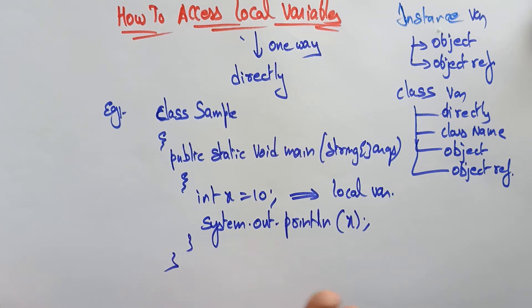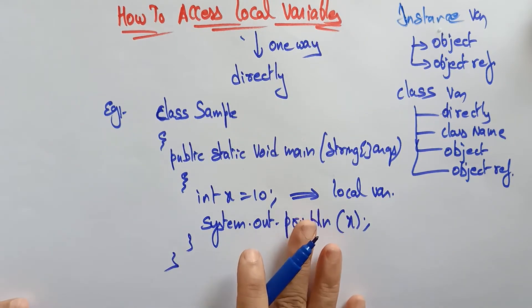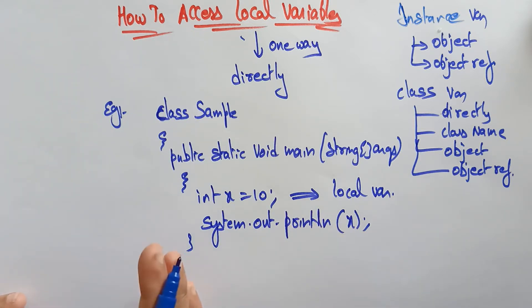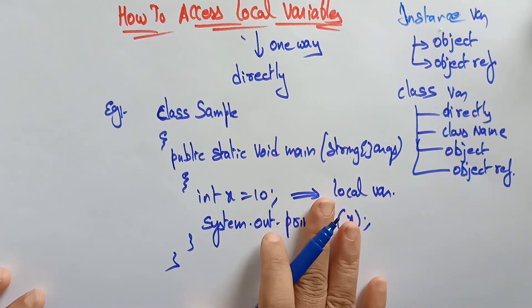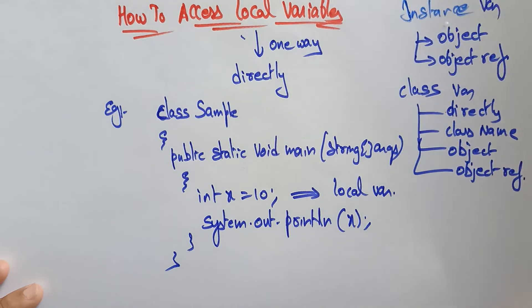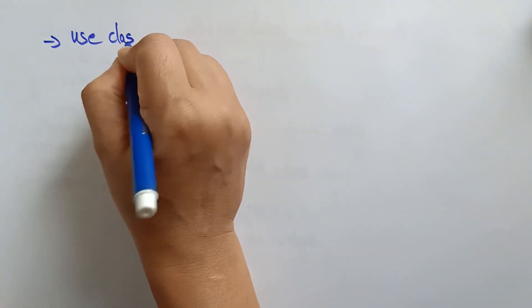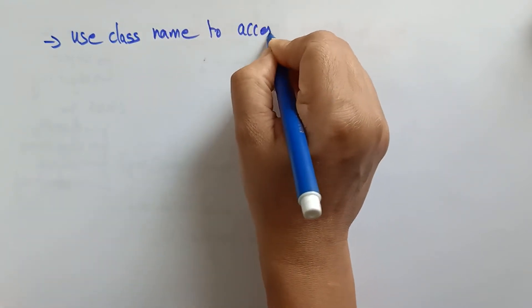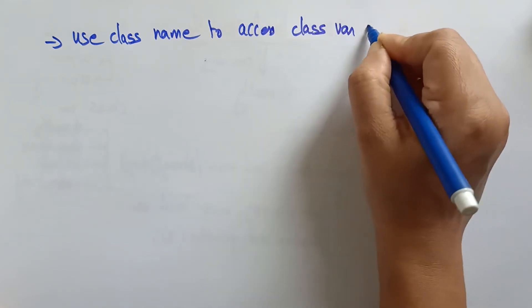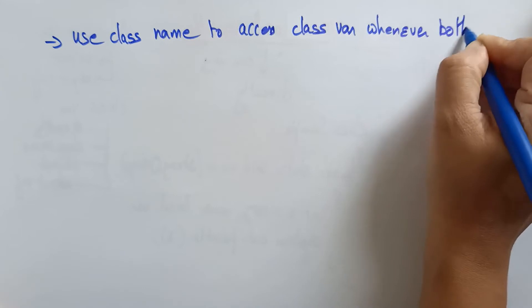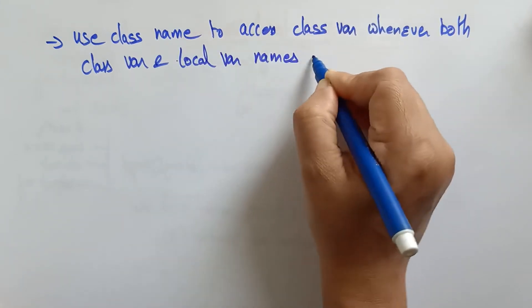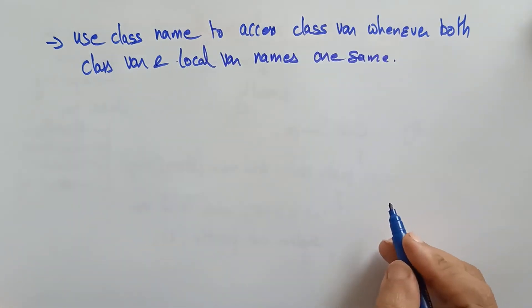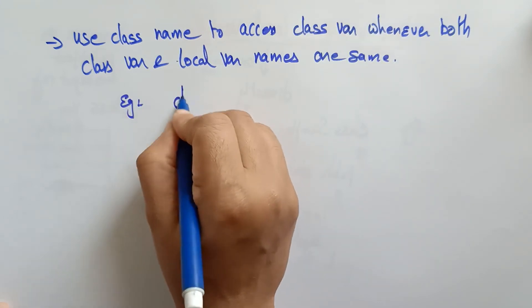One important point: use the class name to access a class variable whenever both the class variable and local variable names are the same. In some cases the class variable and local variable will share the same name, so in those cases you must use the class name to differentiate them.